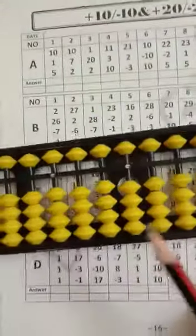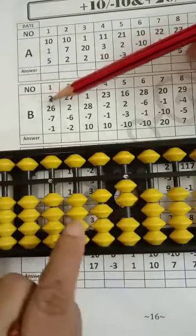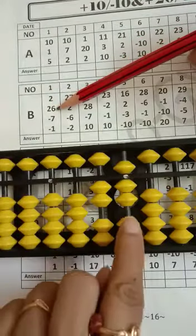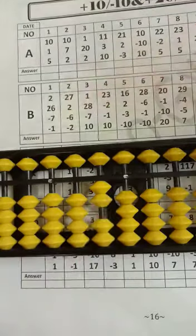So now we have to do some questions on column B. Is 2, then 20, then we have to 6, minus 7, then we have to minus 1, your answer will be 20.